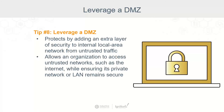Another network technique we can leverage is DMZs — short for demilitarized zone. A DMZ network is a perimeter network that protects and adds an extra layer of security to an organization's internal local area network from untrusted traffic. A common DMZ is a sub-network that sits between the public internet and private networks, or between the business network and the OT network. The end goal of the DMZ is to allow an organization to access untrusted networks like the internet while ensuring its private network or LAN remains secure.